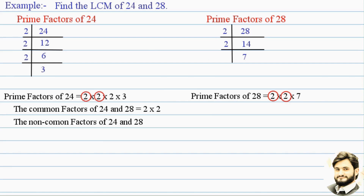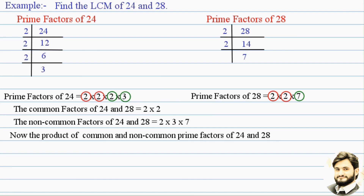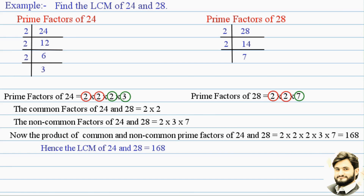The non-common factors of 24 and 28 are 2 and 3 (from 24) and 7 (from 28). The product of common and non-common prime factors of 24 and 28 is 2 × 2 × 2 × 3 × 7, which is equal to 168. Hence, the LCM of 24 and 28 equals 168.